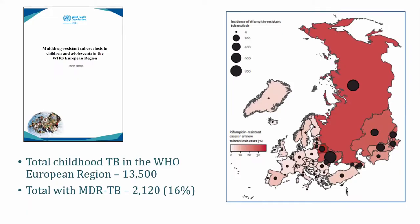In the WHO European region, which extends from Western Europe to Russia, there are an estimated 13,500 cases of TB in children, of which just over 2,000 are MDR-TB. This translates to 16% of child TB in Europe being MDR-TB, with nearly 30% having isoniazid resistance — some of the highest rates of drug resistance in the world.